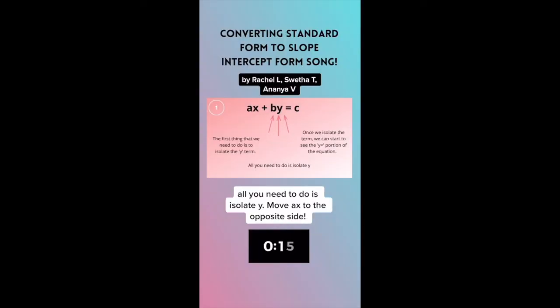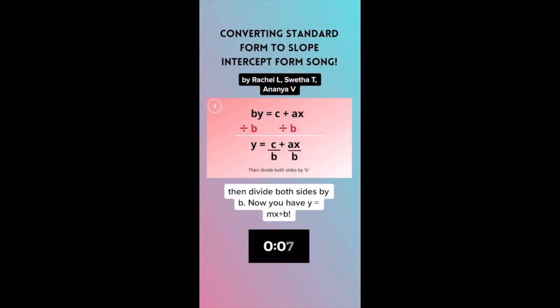All you need to do is isolate y, move ax to the opposite side, and divide both sides by b. Now you have y equals mx plus b.